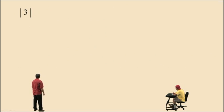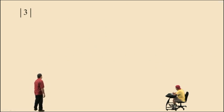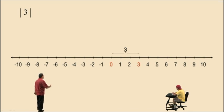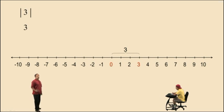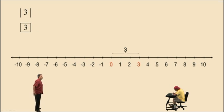How about the absolute value of positive 3? Well, let's look at the number line. Notice positive 3 is 3 units from 0 on the number line. And therefore, the absolute value of 3 is positive 3.